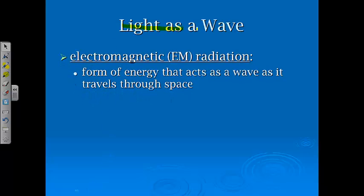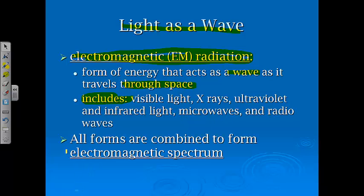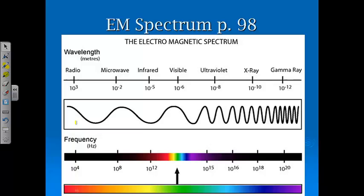First we're going to look at how light behaves like a wave. And first we have to look at what's called electromagnetic radiation, or EM radiation. For EM radiation, it's a form of energy that acts as a wave as it travels through space. This includes a lot of different things that we're familiar with: visible light, x-rays, ultraviolet and infrared light, microwaves—the radiation, not the appliance—and radio waves. All forms are combined to form, or to make, the electromagnetic spectrum.